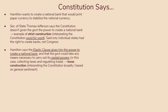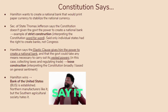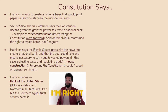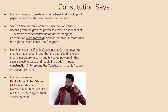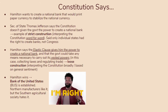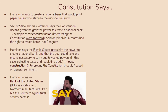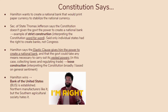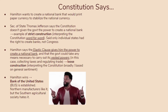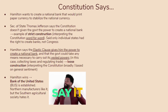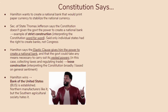At the end of the day, Hamilton wins. He gets the Bank of the United States — referred to as BUS — which is established. Northern manufacturers really liked it because it helped them finance their own trade. But the Southern Agricultural Society hated it — they viewed the Bank as a sort of evil figure and didn't trust it. We're going to see this lingering anti-bank sentiment, especially in the Jacksonian era. Keep in mind that Hamilton's financial policies had largely encroached on states' rights.